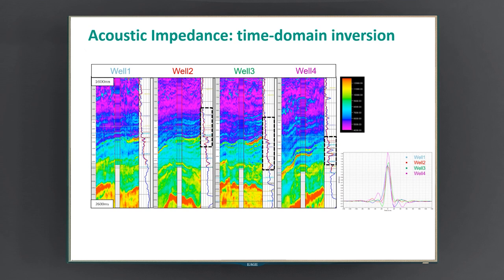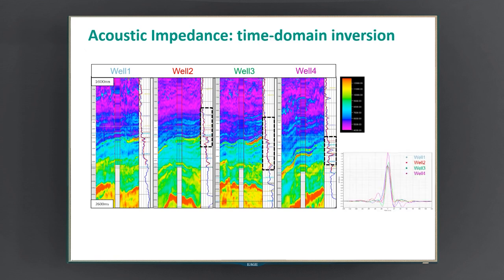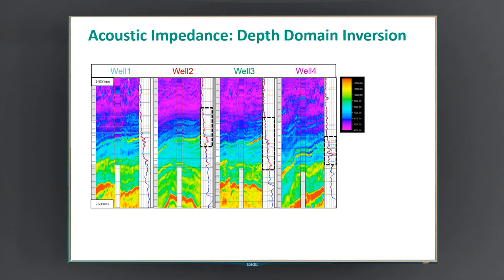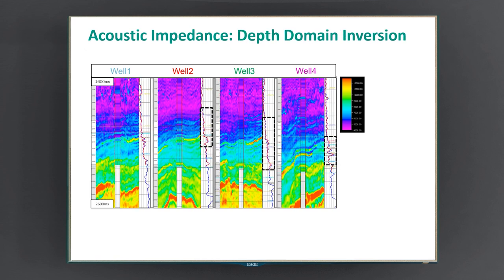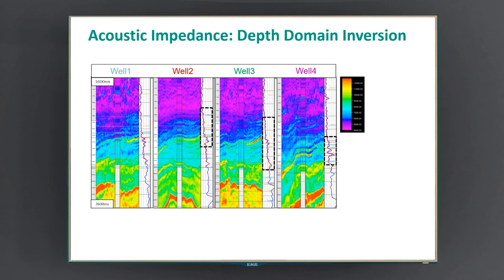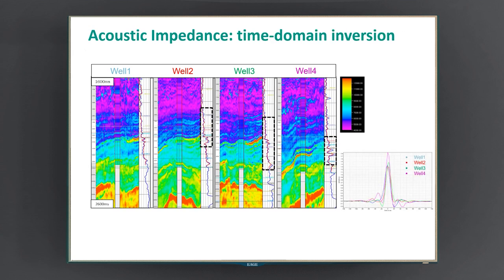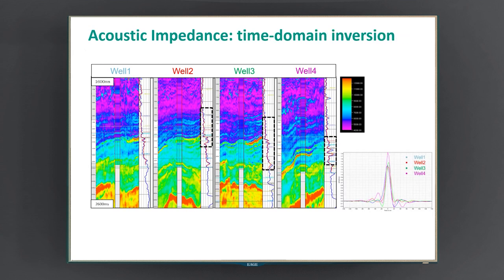If we compare these results with the result of the inversion in the depth domain, now we can see that amplitudes are better balanced for all wells, the acoustic impedance contrasts are much better represented, the image has higher resolution, and also better low frequency content.